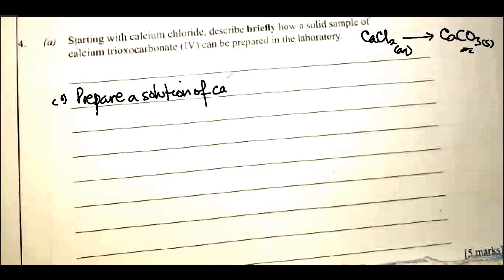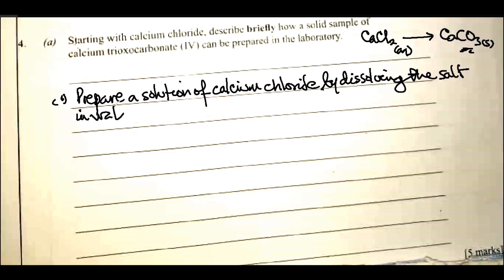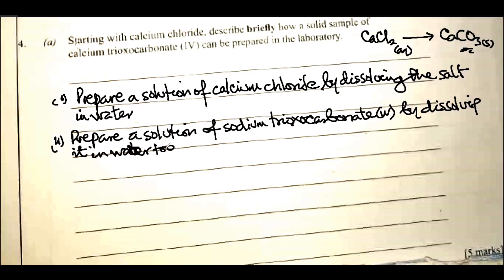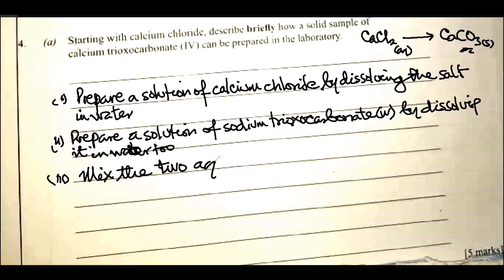First, prepare a solution of calcium chloride by dissolving the salt in water. Then prepare a solution of sodium trioxocarbonate(IV) by dissolving it in water too. Then mix the two aqueous solutions together and stir.